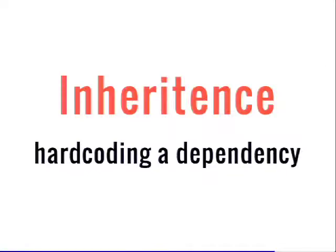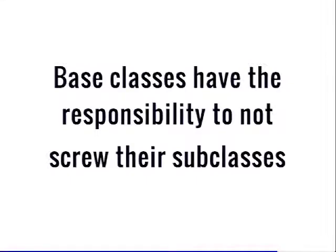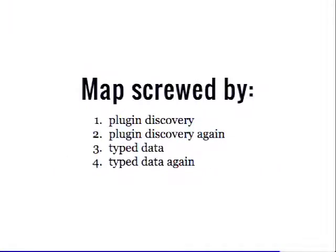The thing to understand here is that inheritance is hard-coding a dependency. We're very sensitive in code to seeing a class's name directly referenced — and in general, that's not a great practice. But we inherit all over the place. Inheritance is actually a tighter form of coupling to that class. There's no way to mock this — it essentially means taking on that class. If you're a base class and we're saying everyone should inherit from you, you have a responsibility not to screw your subclasses. A simple, tiny Map class had problems from two different systems. These systems should not make other code untestable.